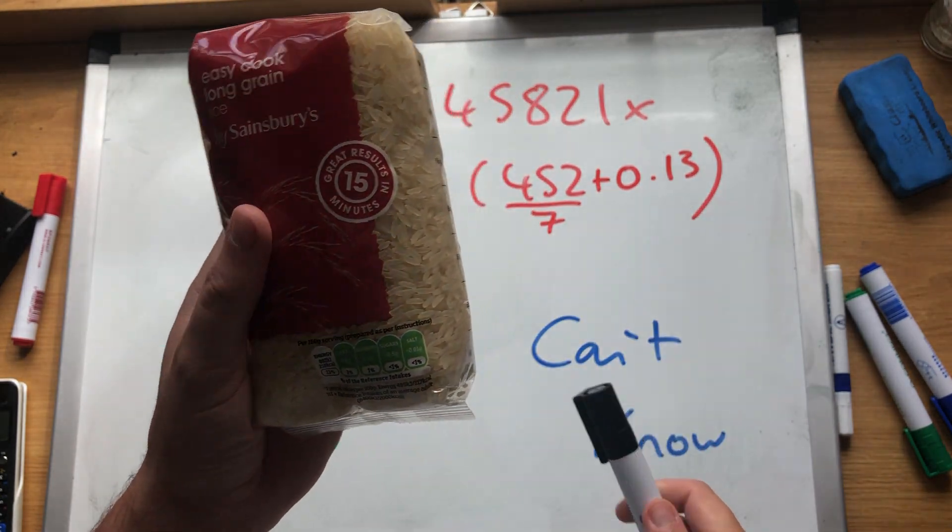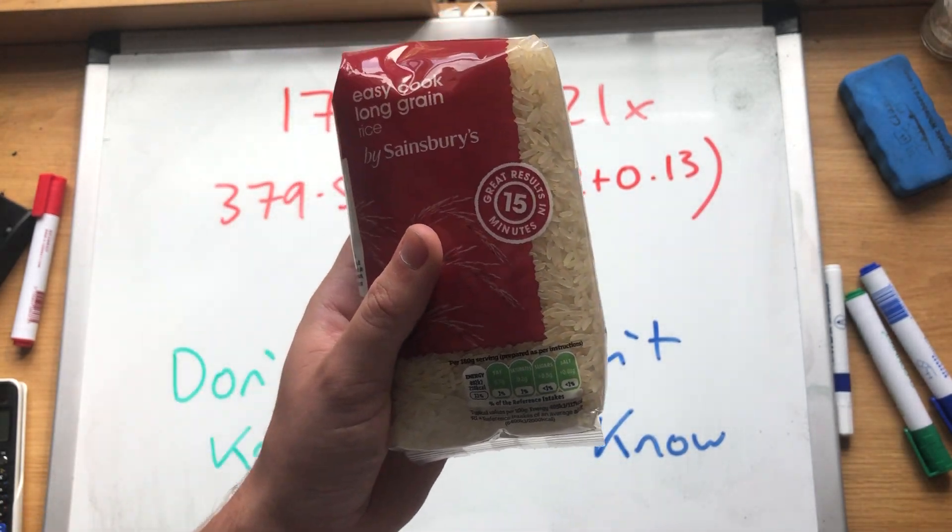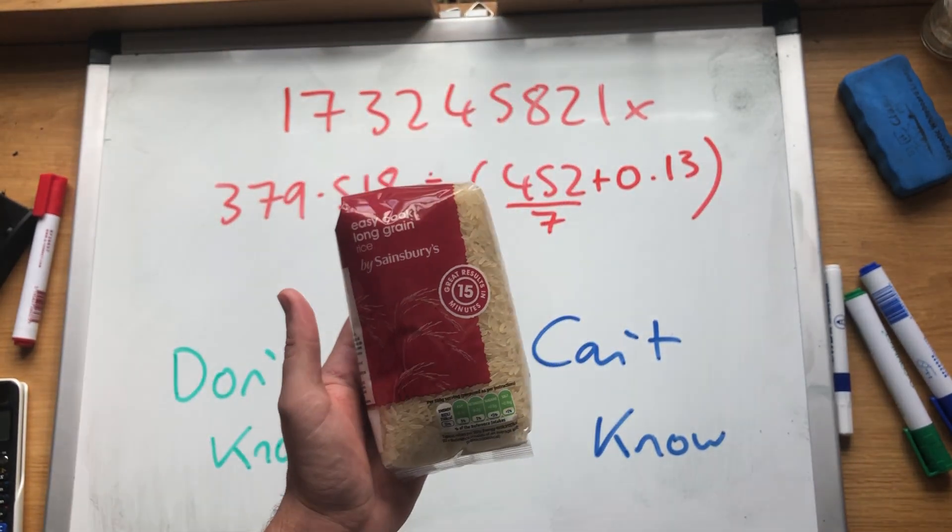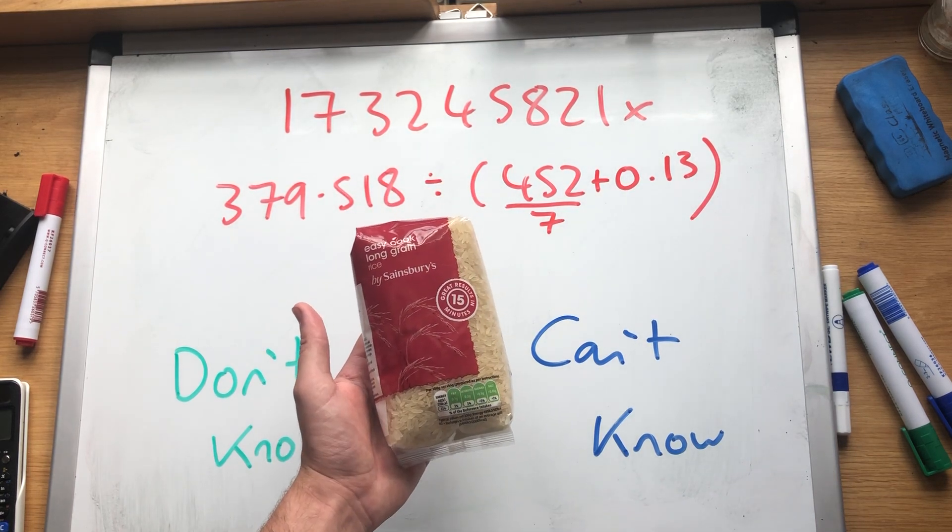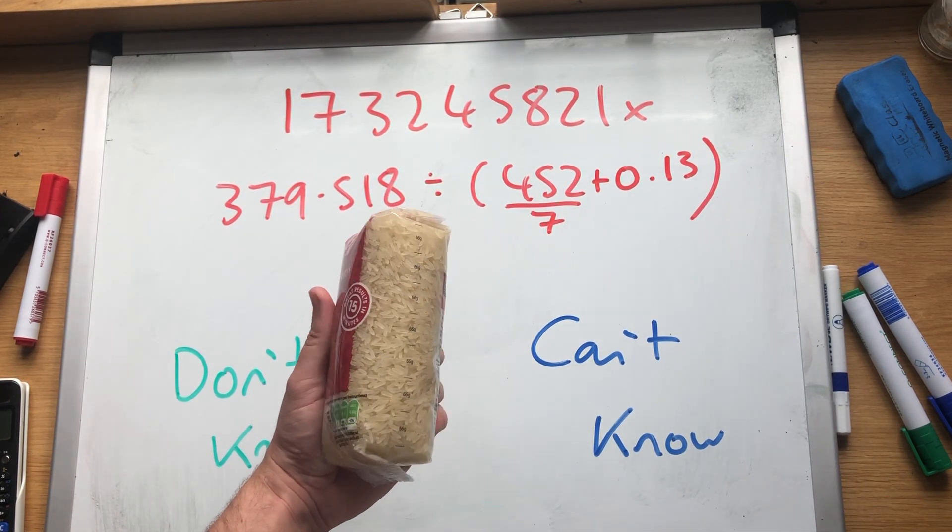When we don't know the exact amount we say x. So how many grains of rice are in here? There are x grains of rice in here.